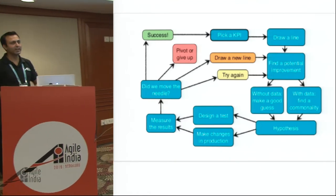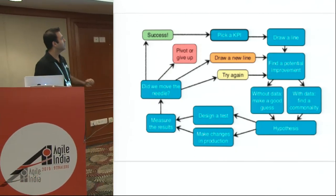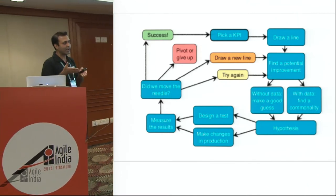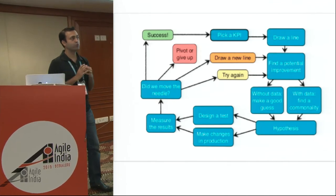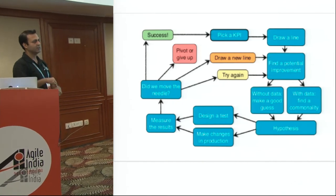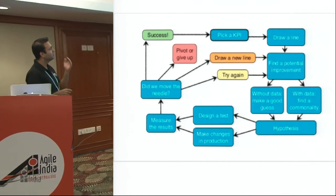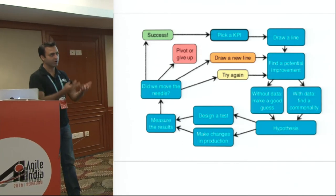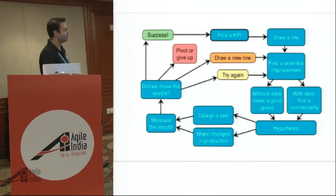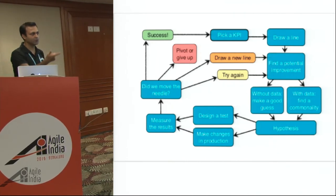Now it's a simple flow — build-measure-learn is more on the development side; this is more on hypothesis testing and analytics. You pick a KPI, and what we call is 'draw a line in the sand.' If you figure out you're in a retention stage, you figure out what should your retention be — what's the ideal retention in a business like yours? Say it's 10%. It doesn't matter if it's 6 or 7; you draw a line that you want to reach 10%. Once you have it, you figure out what potential improvements you can make — your backlog to reach 10%. Once you have it, prioritize, form a hypothesis, design a whole test around it, and use the hypothesis testing loop.